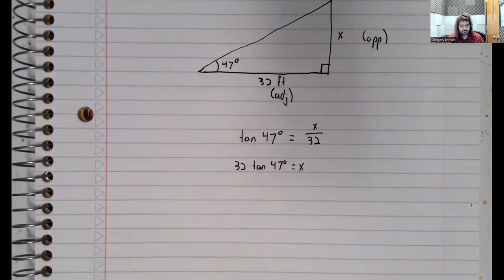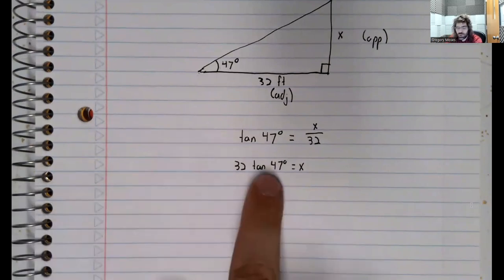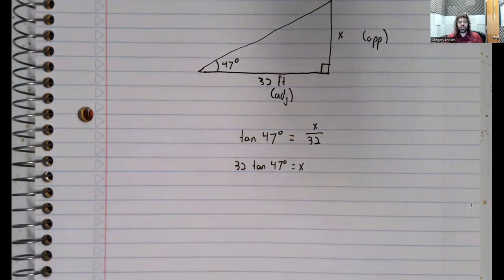And you might say, well, you don't know what the tangent of 47 degrees is. The only angles we learned are pi over 3, pi over 4, pi over 6, 60 degrees, 45 degrees, and 30 degrees. Well, that's what a calculator is for.